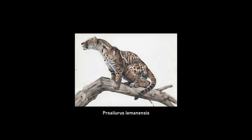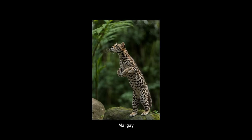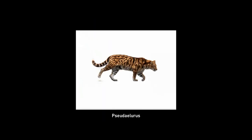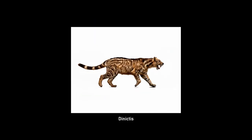Later, during the early Miocene, a species called Proilurus laminensis evolved. This species is recorded as the first known cat species, and its skull is almost identical to that of modern felines. Later, the genus Pseudoilurus evolved, followed by Denictis.